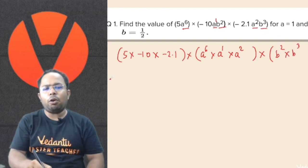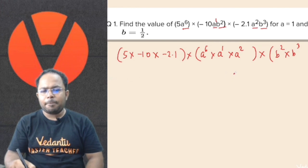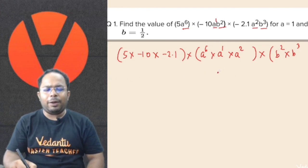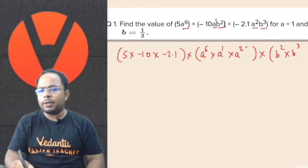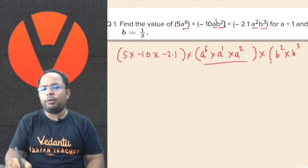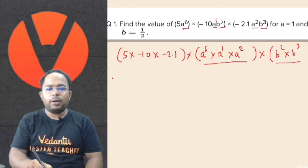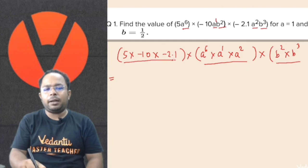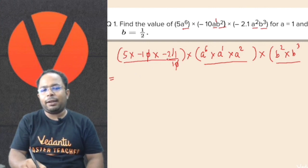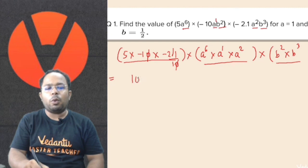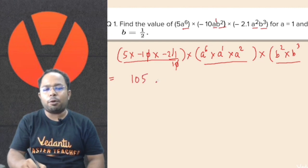As we all know the property — when the bases are the same, we can add the powers. So we can do the addition for a and for b as well. We multiply the constants: removing the decimal point we get 5 into 21 is 105, and minus into minus becomes positive.